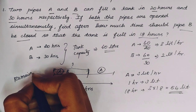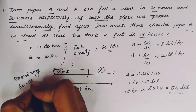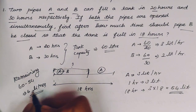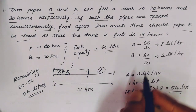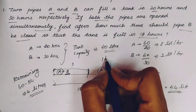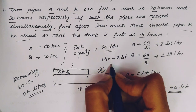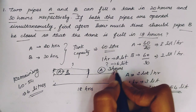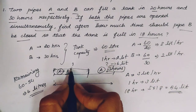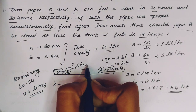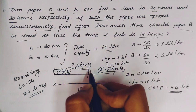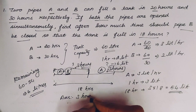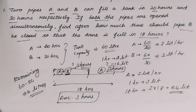The remaining 6 liters are filled by pipe B, which fills 2 liters per hour. So pipe B runs for 6 divided by 2 equals 3 hours. So the answer is 3 hours — pipe B should be closed after 3 hours.